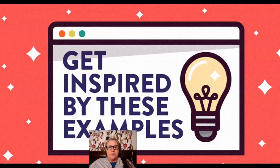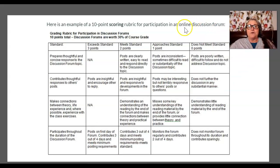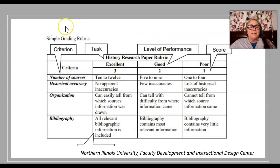Let's look at some other examples to get you inspired. Here's a 10-point scoring rubric used in online discussion forums — this would be an analytic rubric. It has levels: exceeds the standards, meets it, approaches it, does not meet. Here's another one: the task is a history research paper, the levels of performance are excellent, good, and poor, with a score associated with each level and descriptors for each.